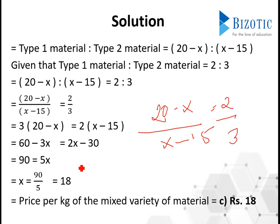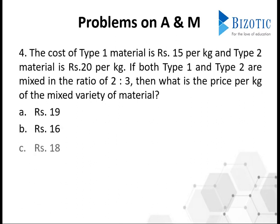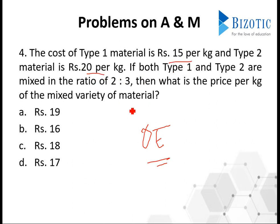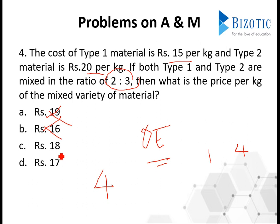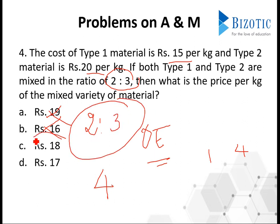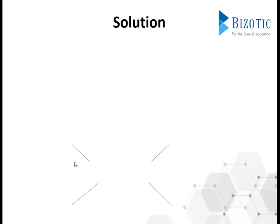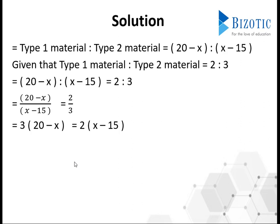So 18 will be the mean price. There is also another way — the option elimination method, though it doesn't work for all problems. We check options: for 19, we get 20 minus 19 = 1 and 19 minus 15 = 4, ratio 1:4 — not right. For 16: 20 minus 16 = 4 and 16 minus 15 = 1, ratio 4:1 — not right. For 18: 20 minus 18 = 2 and 18 minus 15 = 3, ratio 2:3 — correct! So the answer is 18, saving calculation time.